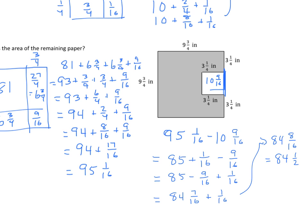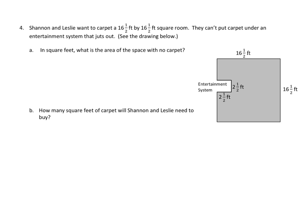It looks like a really tough problem, but it's not. Just take it part by part and work carefully. Now, a parallel homework problem: Shannon and Leslie want to carpet a sixteen-and-a-half by sixteen-and-a-half square foot room. They can't put carpet under an entertainment center that juts out. What is the area of the space with no carpet? That's two-and-a-half times two-and-a-half. For part B, find the area of the entire room and subtract the entertainment center area found in part A. Different numbers, same procedure.